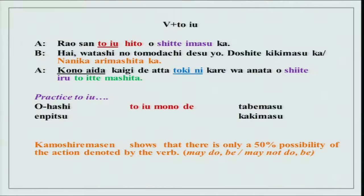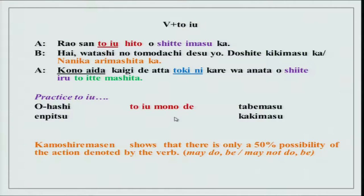There are more uses of to yu. Hashi to iu mono — a thing which is called hashi. Ohashi is chopsticks. Hashi to iu mono de tabemasu — one eats with that. Empitsu to iu mono de kakimasu — one writes with a thing called empitsu. Kanji to iu mono wa muzukashii desu — this thing which is called kanji is a little difficult. This is how you use to iu mono.